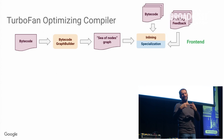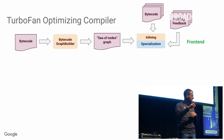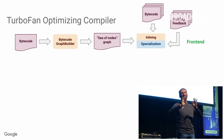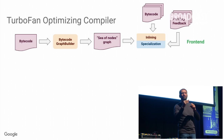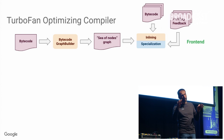This is done by a so-called bytecode graph builder, which takes the bytecode and turns it into a graph representation that we can optimize. The first step is the so-called inlining pass, where we might decide to include other functions as well. So if you have a function that calls another function and the threshold allows us to inline it, then at this point we might take the bytecode from that function and inline it at that call site.